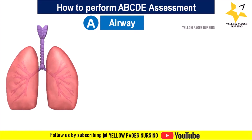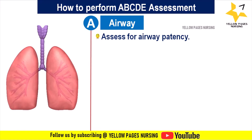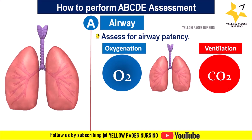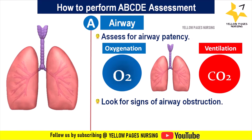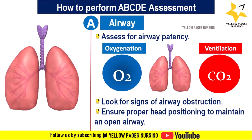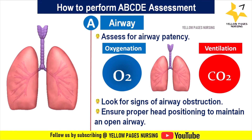How to perform ABCDE assessment — Airway: assess for airway patency and ensure that the patient is in a position that helps maintain an open airway, as ensuring a patent airway is essential for adequate oxygenation and ventilation. Look for signs of airway obstruction such as stridor, wheezing, or difficulty breathing. Ensure proper head positioning — the head should be in a neutral position and the neck slightly extended, unless contraindicated.